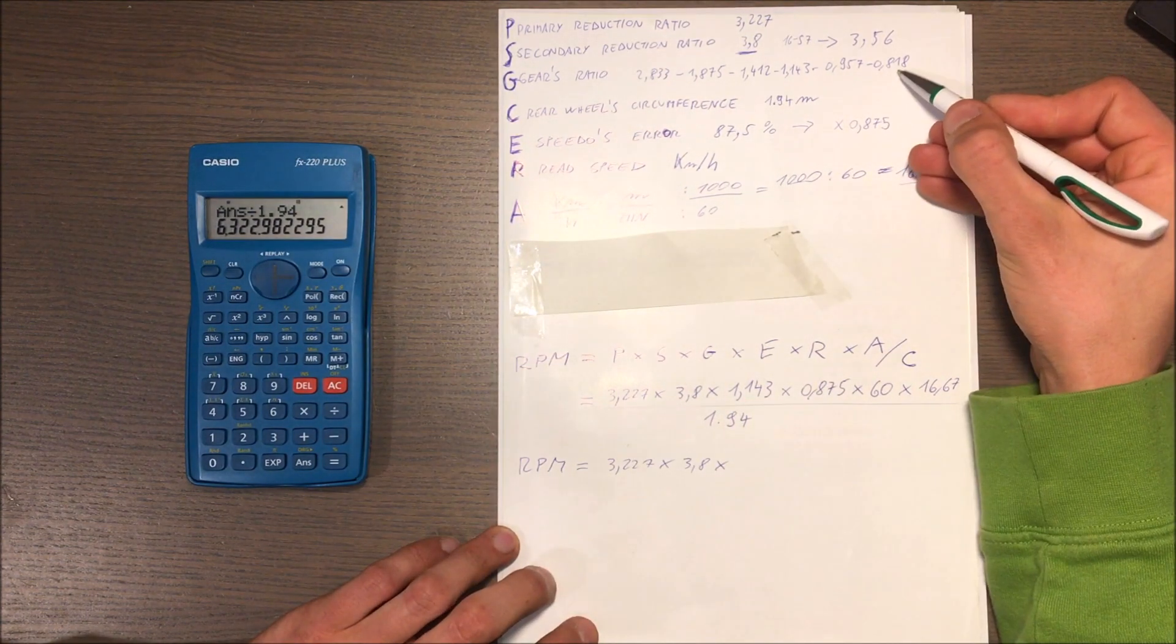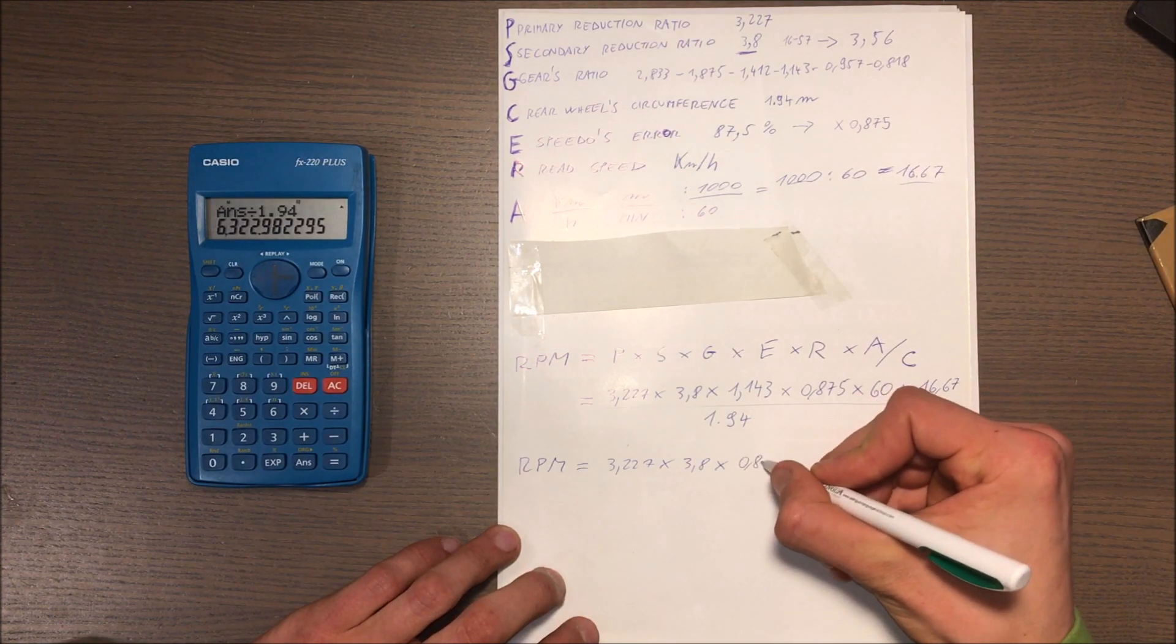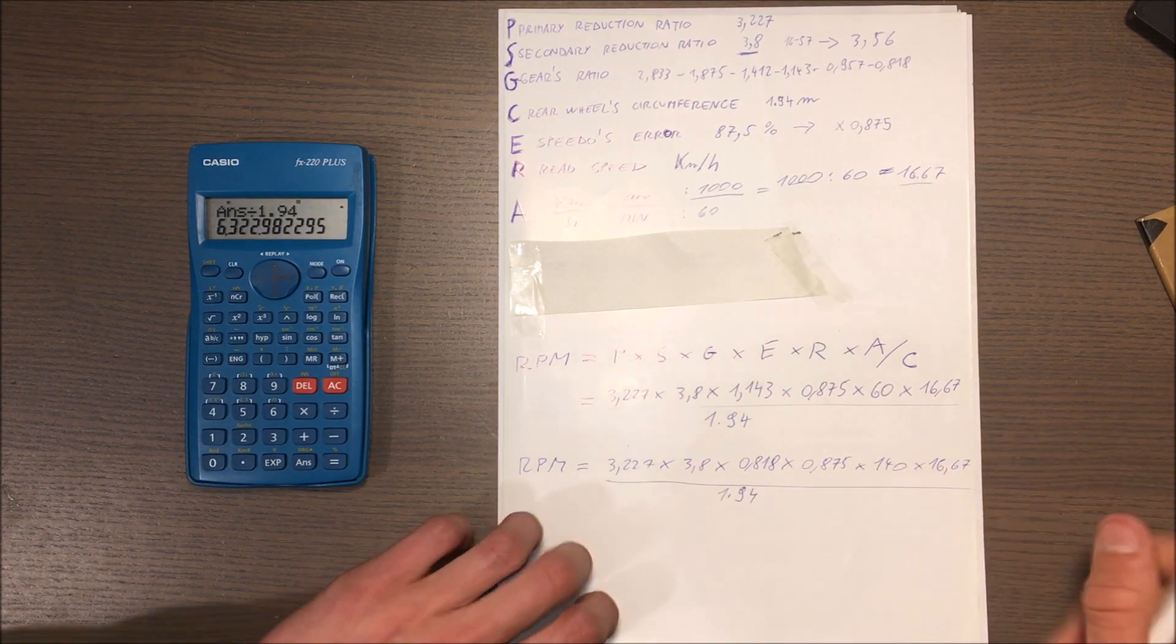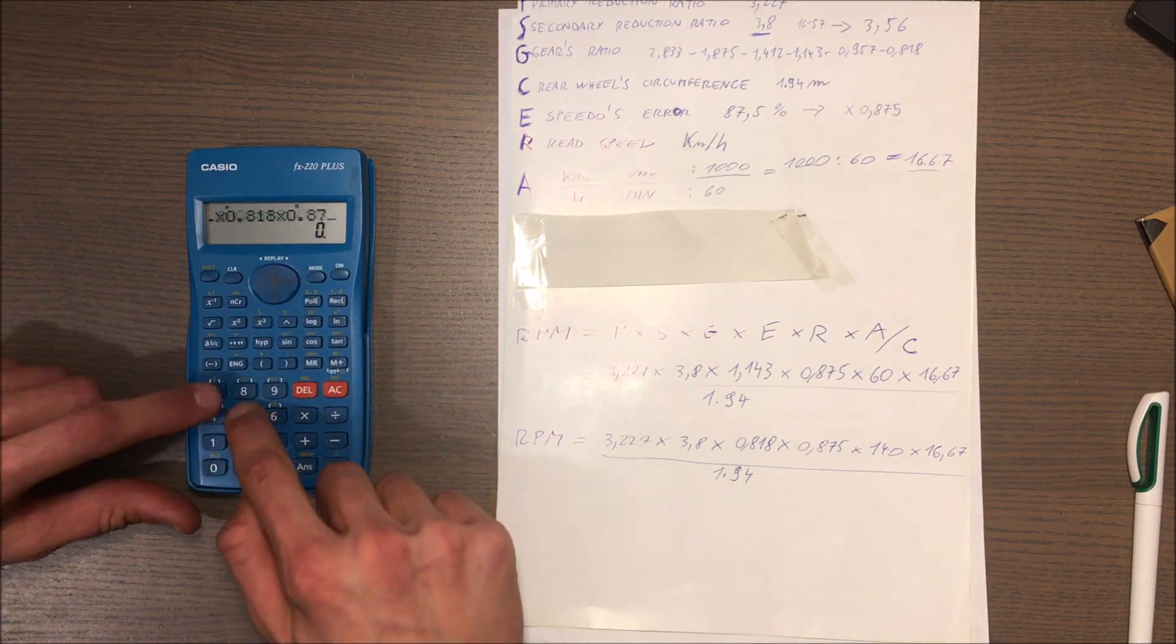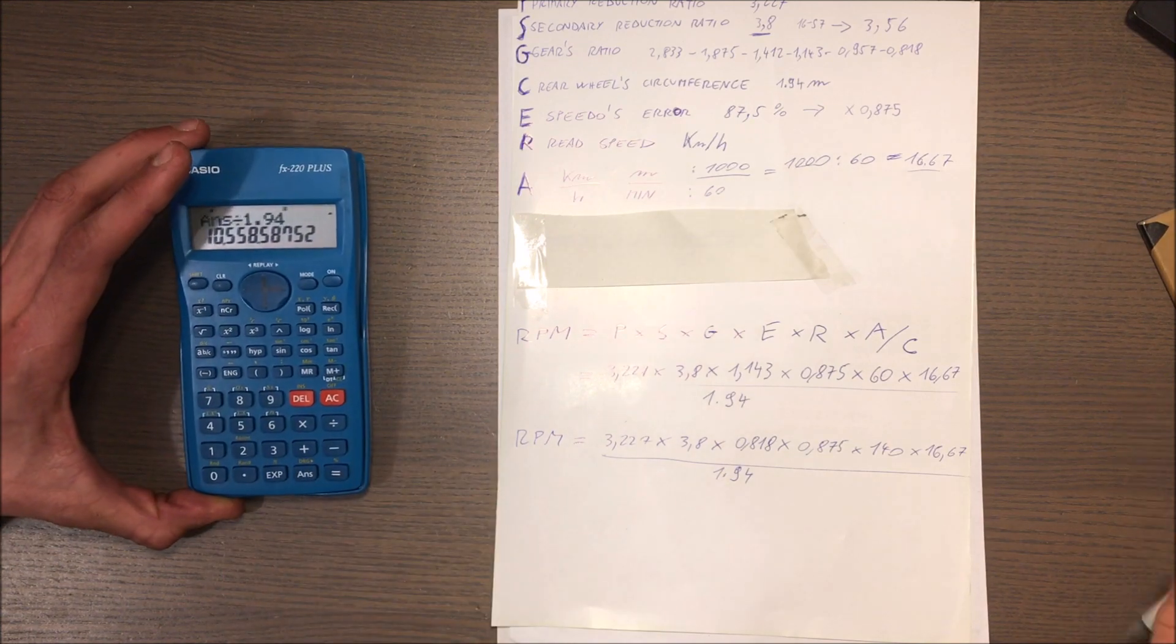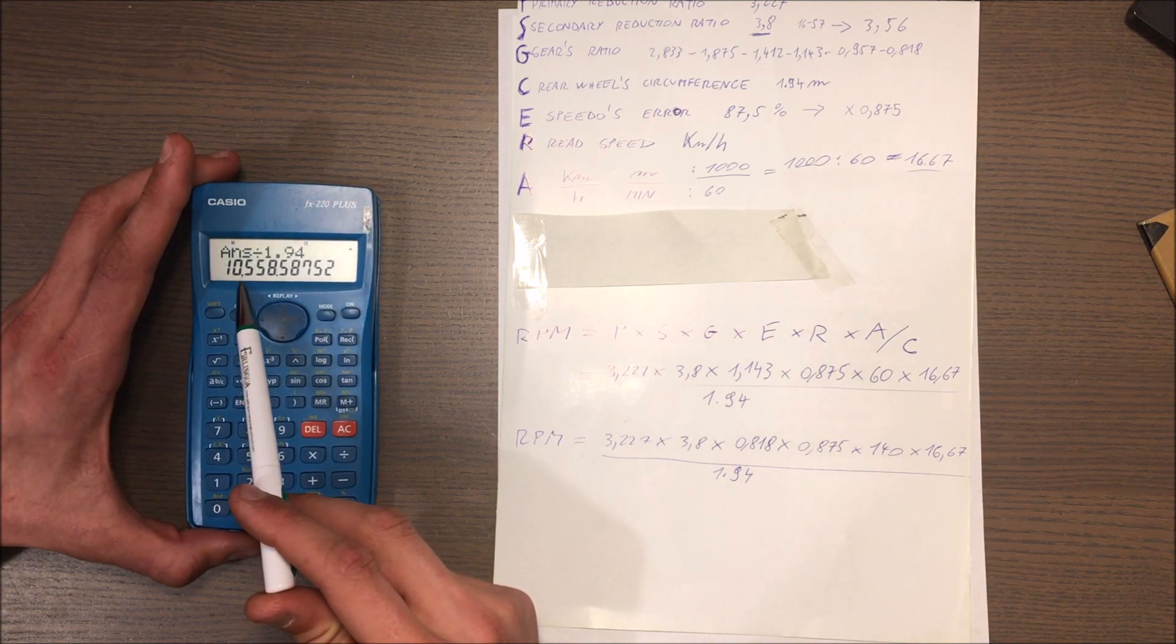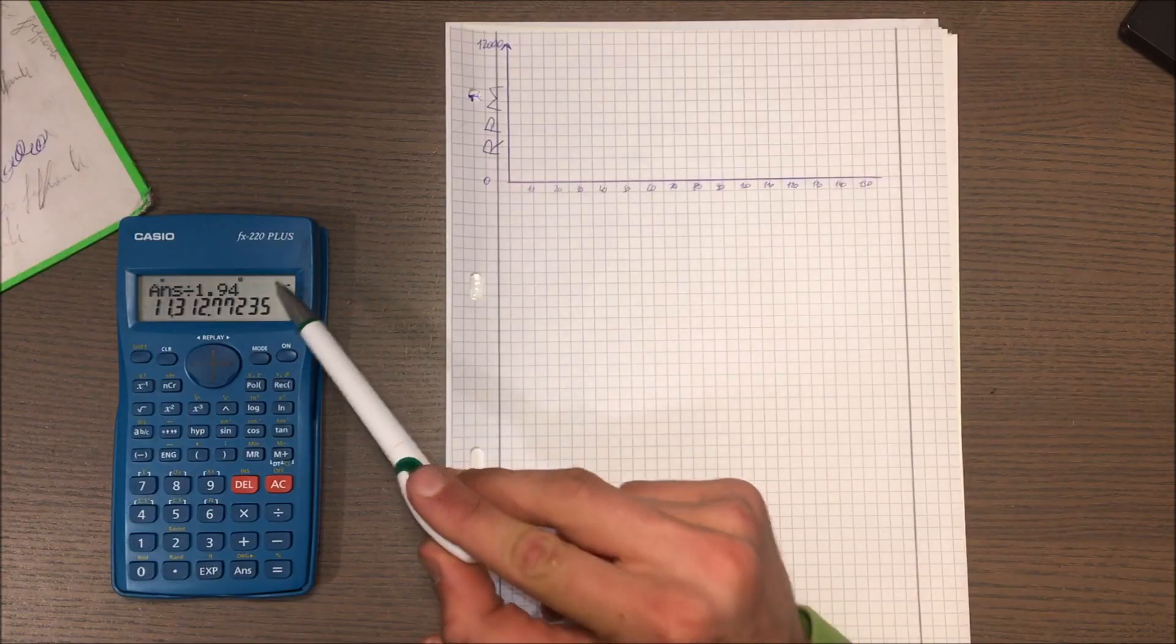6th gear is 0.818, 140, this is the speed. So when I am at 140 kilometers per hour, my RPM is 10,000 and about 500.